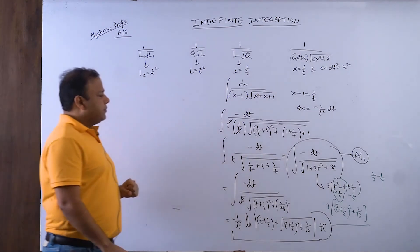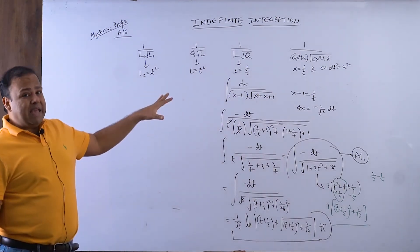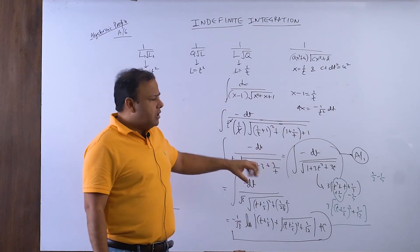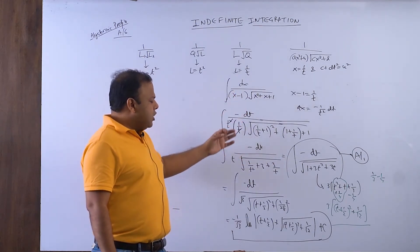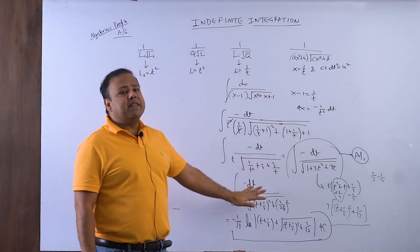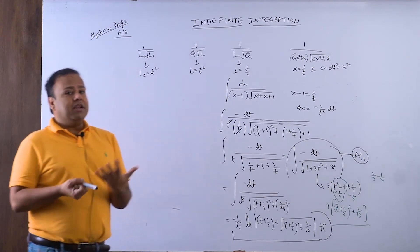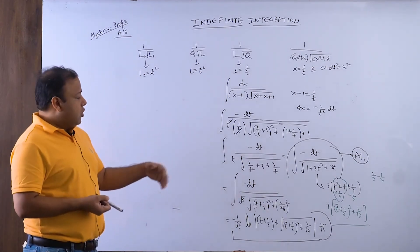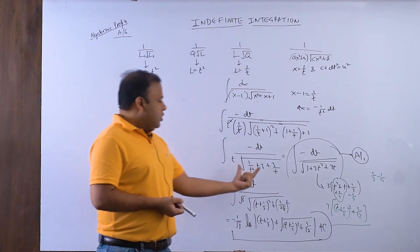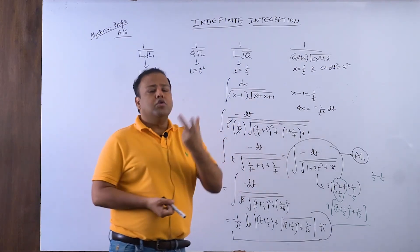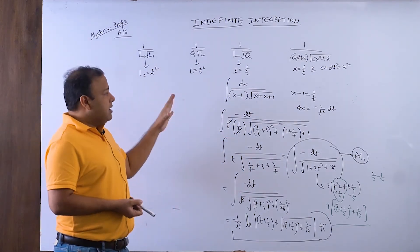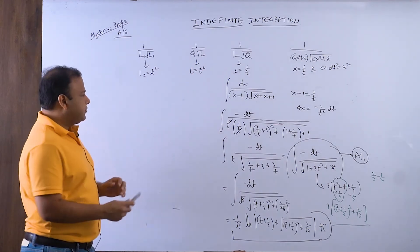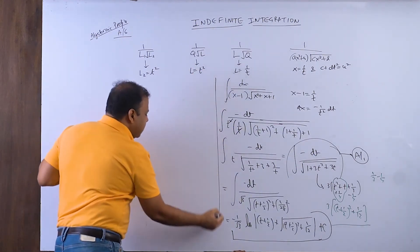This looks complicated because I wrote a random example. When the actual question comes in the exam, it may be simpler — in objective papers it may be cleaner, perhaps with only two terms inside the root instead of three. But ultimately the concept is the same and you have to apply this method.